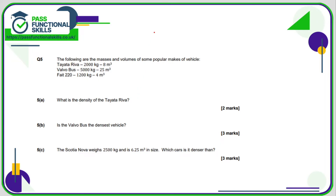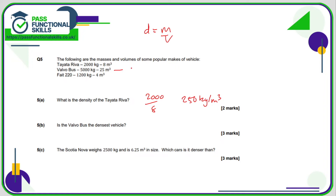Question number five. Density is the mass divided by volume. The density of the Toyota Riva is going to be 2,000 divided by 8, and 2,000 divided by 8 is 250 kilos per cubic metre. Is the Volvo bus the densest vehicle? Let's work out its density: 5,000 divided by 25 works out as 200 kilos per cubic metre.